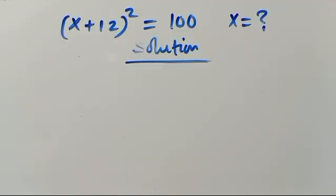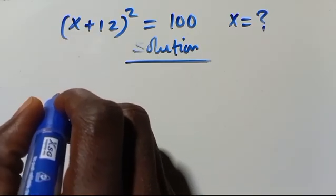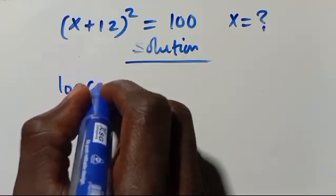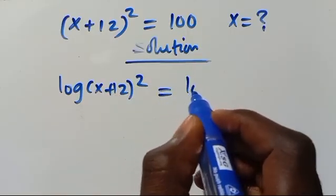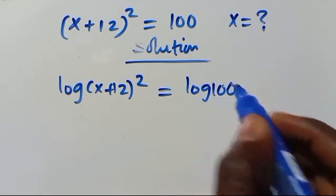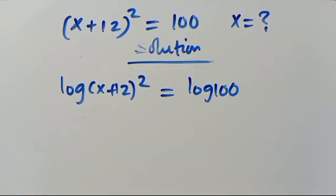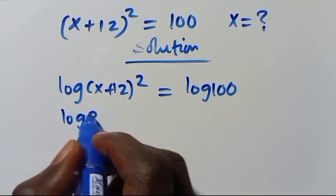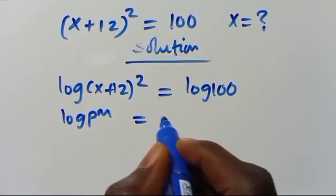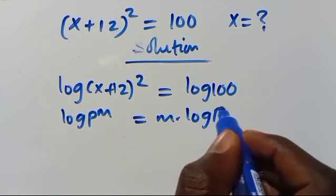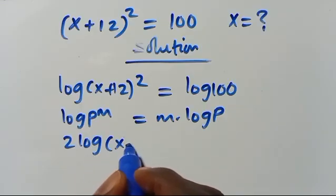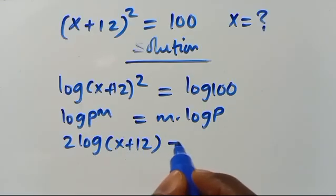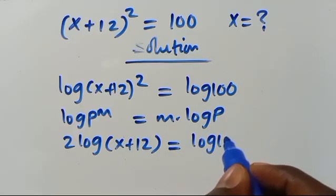From here, let's introduce log to both sides of this expression. So we have log of x plus 12 to the power of 2 equals log 100. Let us recall we have log p to the power of m equals m times log p. So here it will be 2 times log of x plus 12 equals log 100.